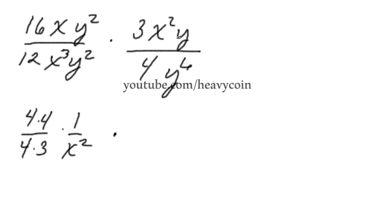Alright, times, let's look at this, 3x squared. We have a y, 6 y's, so that y is going to cancel out. We'll be left with 4y to the 5th.